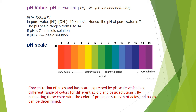To find out the strength of an acidic or basic solution, pH value is used. Here, 'p' stands for power and 'H' stands for hydrogen ion concentration. pH equals minus logarithm of H⁺ concentration. In pure water, H⁺ equals OH⁻ and its concentration is 10⁻⁷ mol per liter, giving a pH of 7. The pH scale ranges from 0 to 14. If pH is lower than 7, the solution is acidic; if pH is more than 7, it is a basic solution. By comparing this pH scale, we can determine the strength of an acid or base.